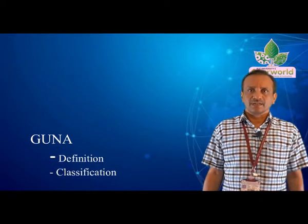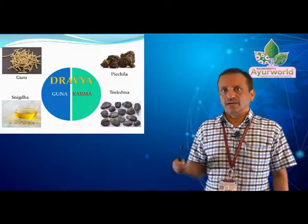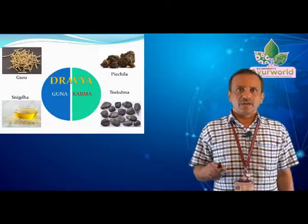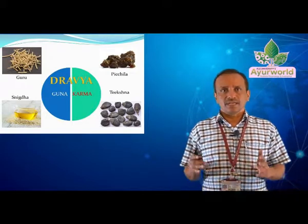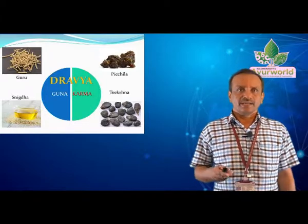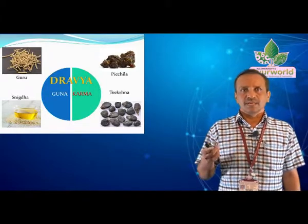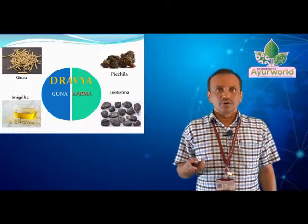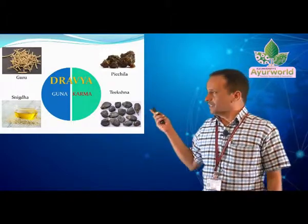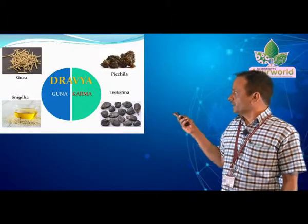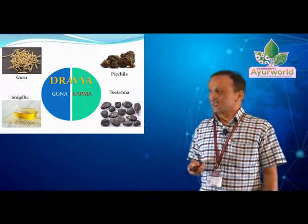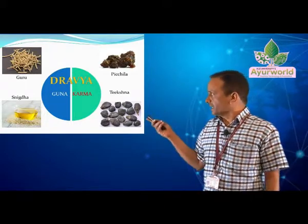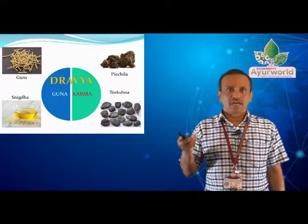We know that in Drabya Guna, we have Dravyas, Guna and Karma, and these Guna and Karma are present in Drabya inherently. We can see many Dravyas like Ashwagandha, which is Guru; Bukkulu, which is Pichila; Thaila, which is Snigtha; and Balataka, which is Thichna. These Dravyas are having these Guru, Pichila, Snigtha, and Thichna Gunas.